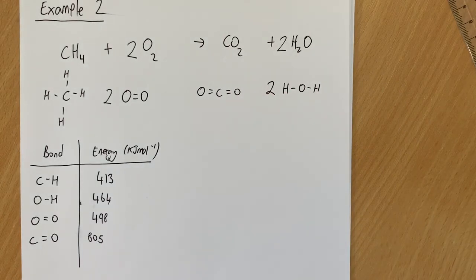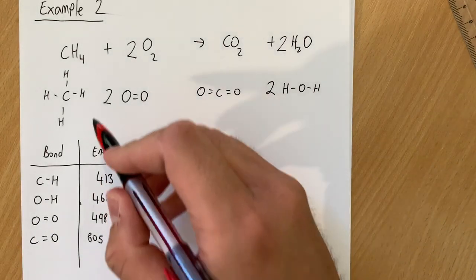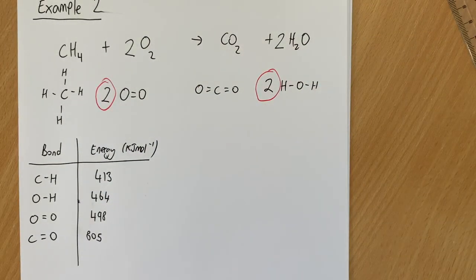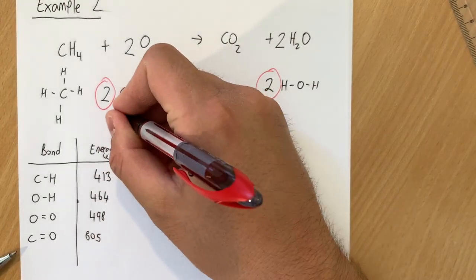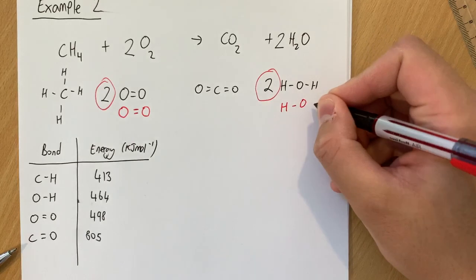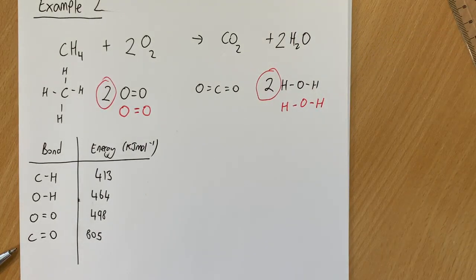Now what I would tend to do with this is the first thing that really confuses students and makes them make the most errors is they forget about these balancing numbers here and here. So what we're going to do first, the easiest way of doing this is to actually draw in the second of each of these molecules so you can easily count the bonds.